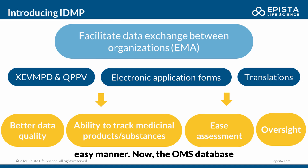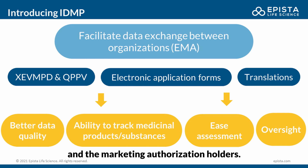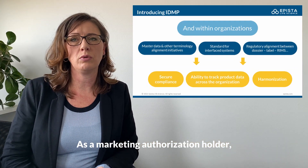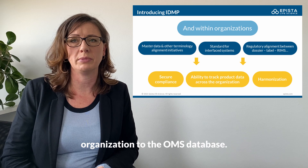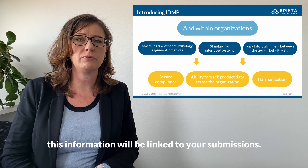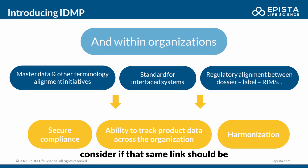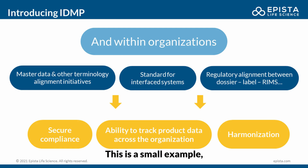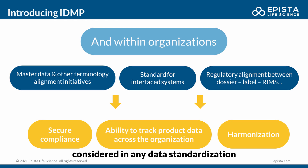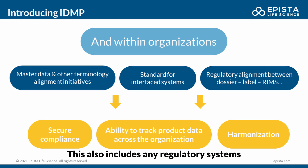The OMS database is populated both by the agency and the marketing authorization holders. As a marketing authorization holder, you are responsible for adding your own organization to the OMS database. For the agency, this information will be linked to your submissions. You may, as an organization, consider if that same link should be available in your organization, for instance in your WIM system. This is a small example, but it makes clear that IDMP should be considered in any data standardization initiative you may have where regulatory data is in scope — including any regulatory systems you may consider updating or implementing.